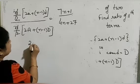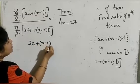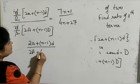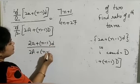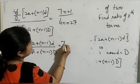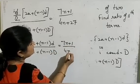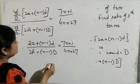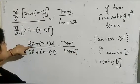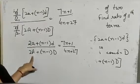The n/2 cancels out clearly. We are left with (2a + (n−1)d) / (2A + (n−1)D) = (7n + 1) / (4n + 27). Both denominators do not cancel because the first terms of the two series are different.